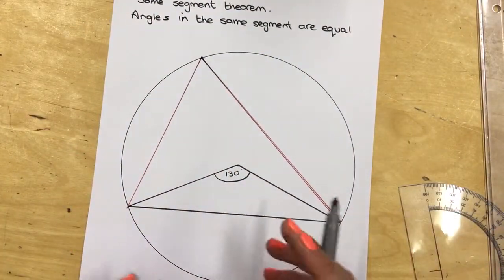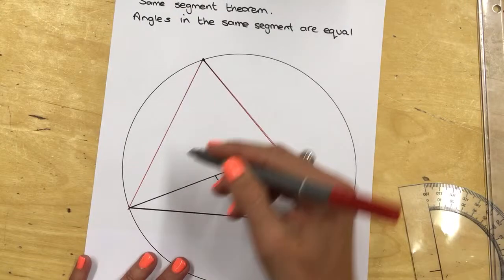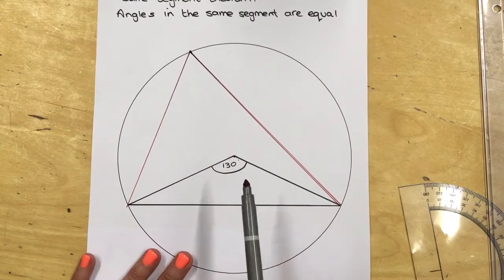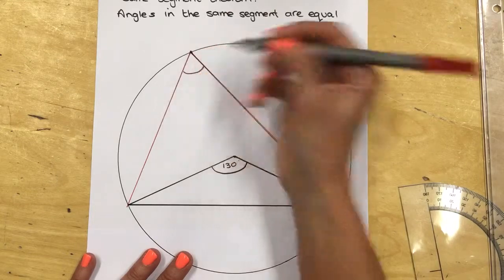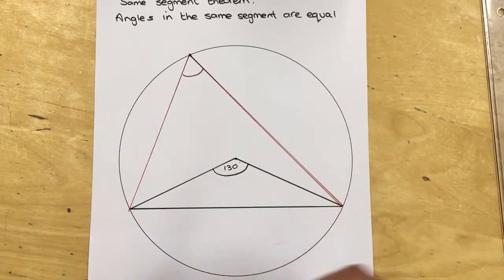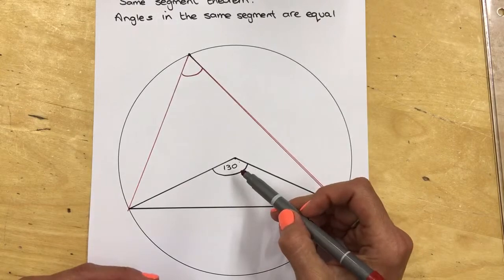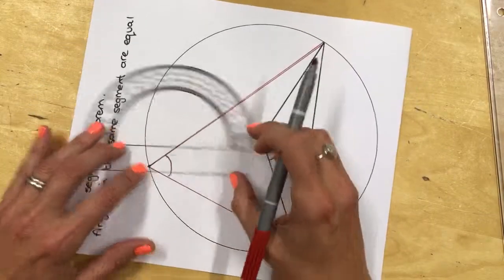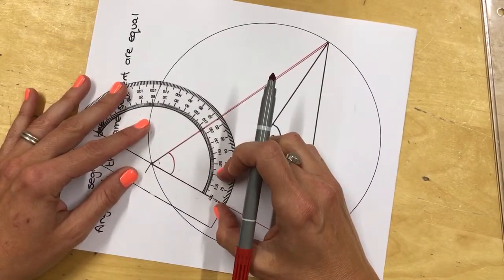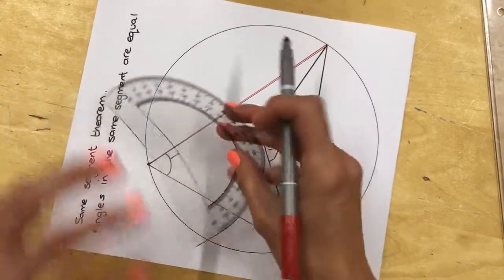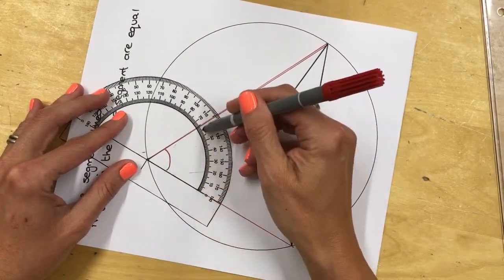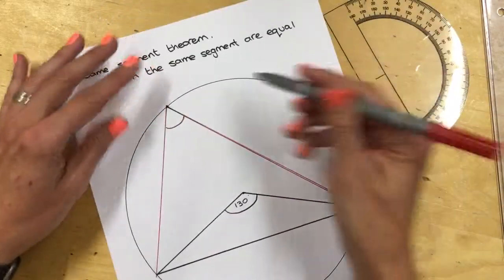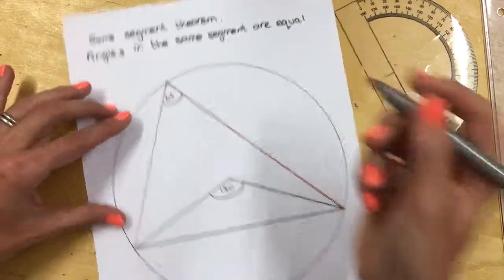Hence forming a shape that we looked at the other day, where the angles at the centre are double that at the circumference. So in theory, this angle here should be half of this angle. So let's just check. So this angle here is 65. Perfect. So this is 65 degrees.